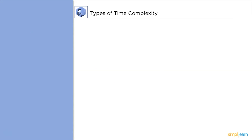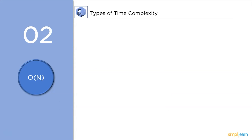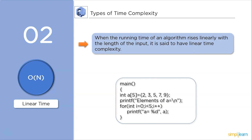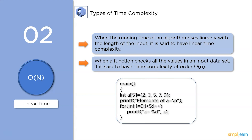Next up, linear time complexity. When an algorithm's running time increases linearly with the length of the input, it is said to have linear time complexity. When a function checks all the values in an input data set, it is said to have the time complexity of order O(n). As you can see in the code, the loop depends on the size n, so the time complexity grows up to n.